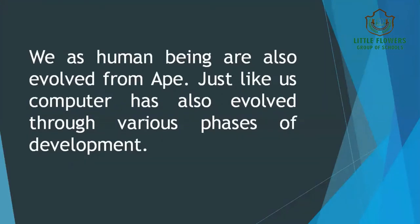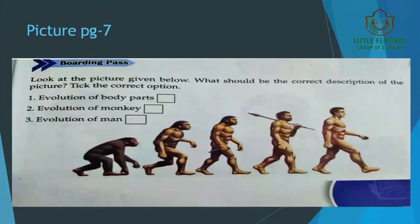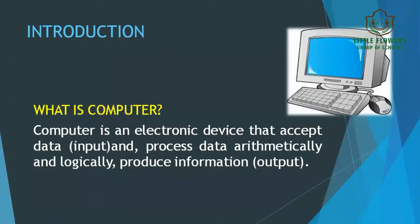We as human beings have also evolved from apes. Just like us, the computers have also evolved through various phases of development. As you can see in the picture, human beings have evolved from apes — the first picture is of an ape and the final picture is of a human being. So the correct answer for this question is the evolution of man.